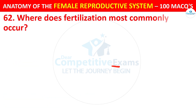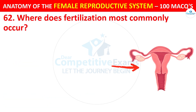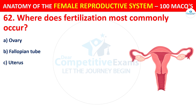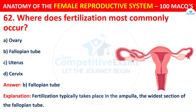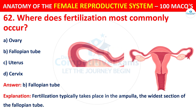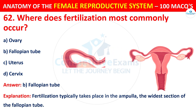Question number 62. Where does fertilization most commonly occur? Options: ovary, fallopian tube, uterus, or cervix. The correct answer is B — the fallopian tube. Fertilization typically takes place in the ampulla, the widest section of the fallopian tube.